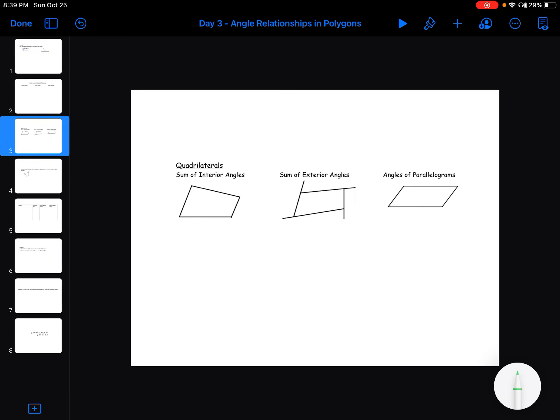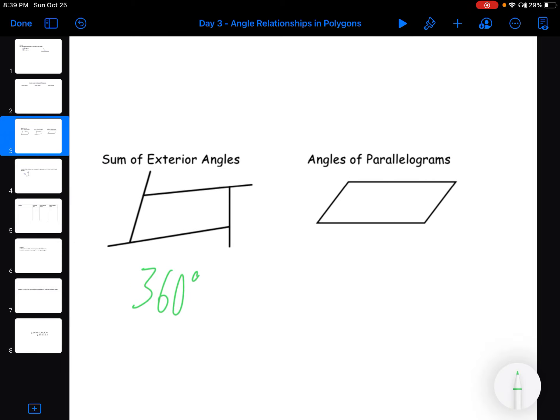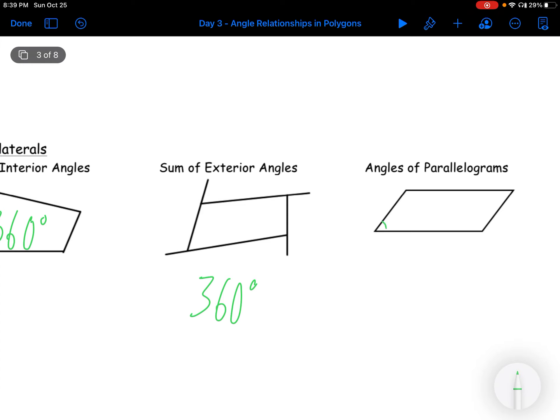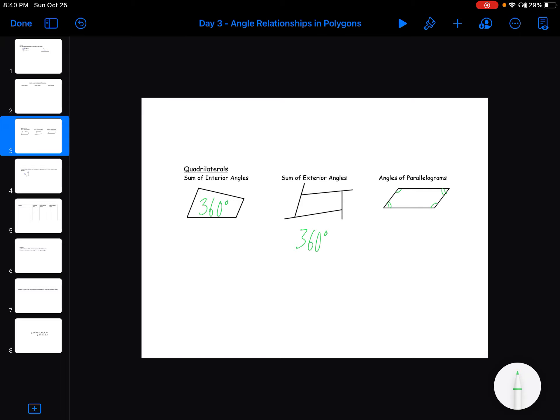So we talked about this last day. Sum of interior angles of quadrilateral add to 360. Sum of exterior angles add to 360 because it adds to 360 for all shapes. And then this is just kind of something that you should know. Angles of a parallelogram, this angle is equal to this angle, and this angle equals that angle. That's what makes it a parallelogram. So we can actually check that by finding our slopes and things like that.